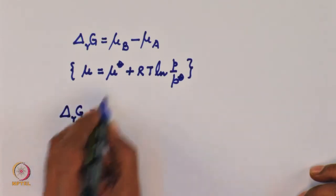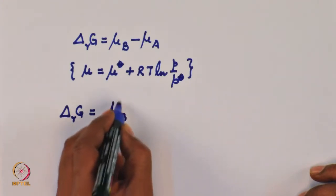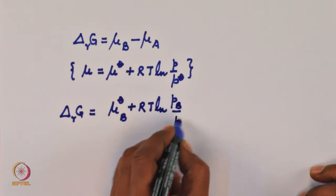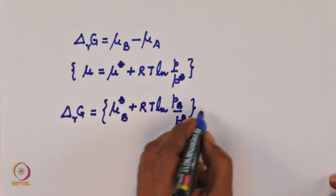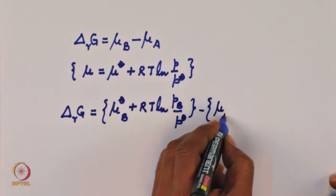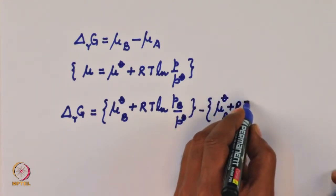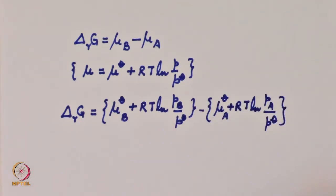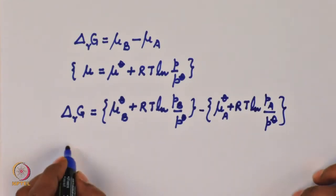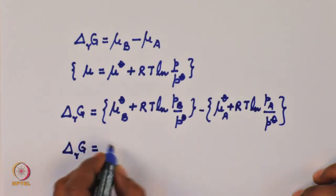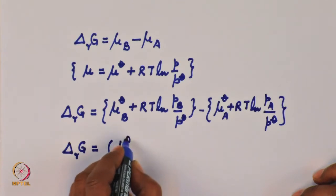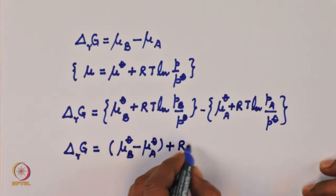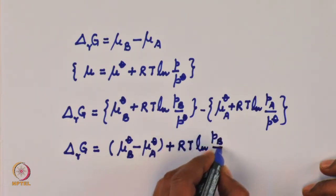Therefore, delta Rg will be equal to — let us write for mu B — it will be mu B naught plus RT log Pb by P naught. For mu A, it will be mu A naught plus RT log Pa by P naught. Further, delta Rg will be equal to mu B naught minus mu A naught, and combining the logarithmic terms it will be RT log Pb by Pa.